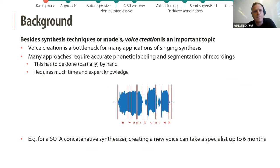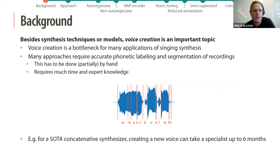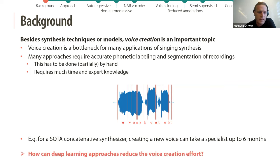Besides singing synthesis techniques or models, voice creation is also an important topic — it is usually a bottleneck in many applications. Most approaches require accurate phonetic labeling and segmentation of recordings, which has to be done by hand, requiring a lot of time and expert knowledge. For example, for a state-of-the-art concatenative synthesizer, creating a new voice can take a specialist up to six months of work. So the second research question is: how can deep learning approaches reduce the voice creation effort?